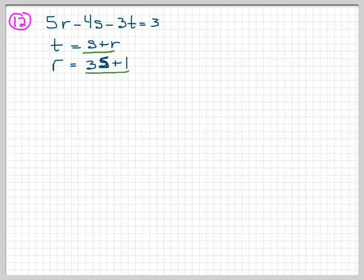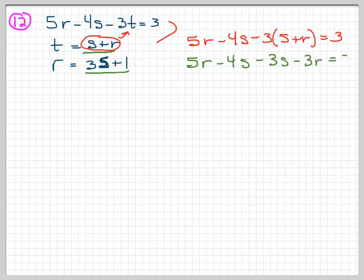To do this, I'm just going to take what t is first of all, and I'm going to plug it into equation 1. By combining those with substitution, I get 5r minus 4s minus 3 times, here comes the substitution, s plus r equals 3. And so now I'll clean that equation up. I've got 5r minus 4s minus 3s minus 3r equals 3.